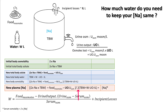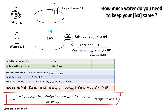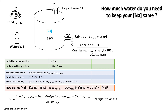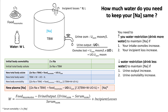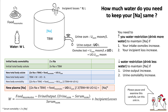New plasma sodium equals new body osmolality divided by two. Setting new sodium equal to previous sodium and solving the equation, you get: free water restriction = (milliosmoles in food − urine output × [urine osmolality − serum osmolality]) + insensible losses. This equation tells you that you need to increase your water restriction — drink more — to maintain sodium if osmole intake increases or insensible losses increase. Conversely, you must decrease water intake to maintain sodium if urine output or urine osmolality increases.